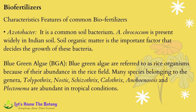Many species belonging to the genera Tolypothrix, Nostoc, Schizothrix, Calothrix, Anabaena and Plectonema are abundant in tropical conditions. Most nitrogen-fixing blue green algae are filamentous, consisting of chains of vegetative cells including specialized cells called heterocysts, which function as micro-nodules for synthesis of nitrogen-fixing machinery.